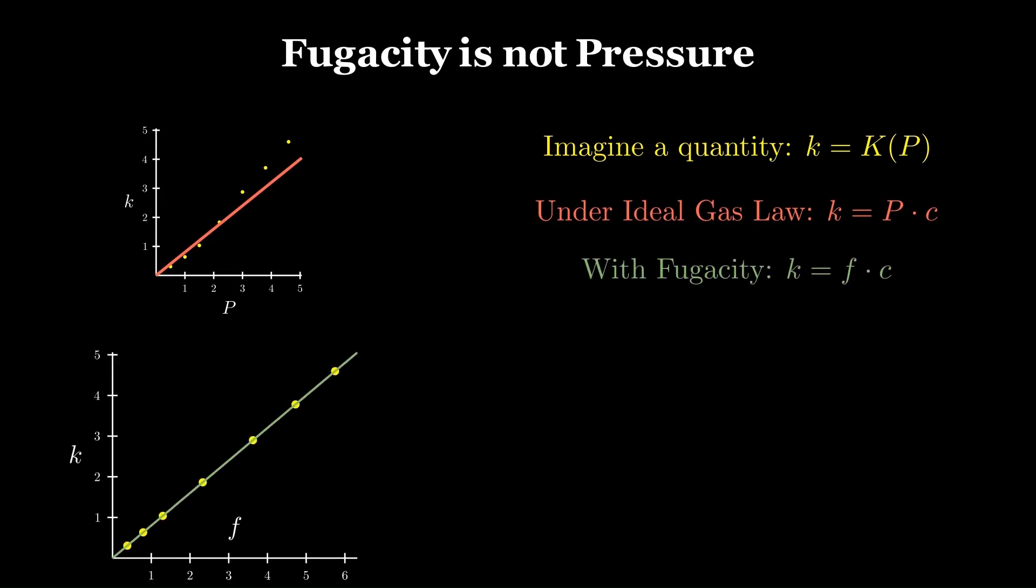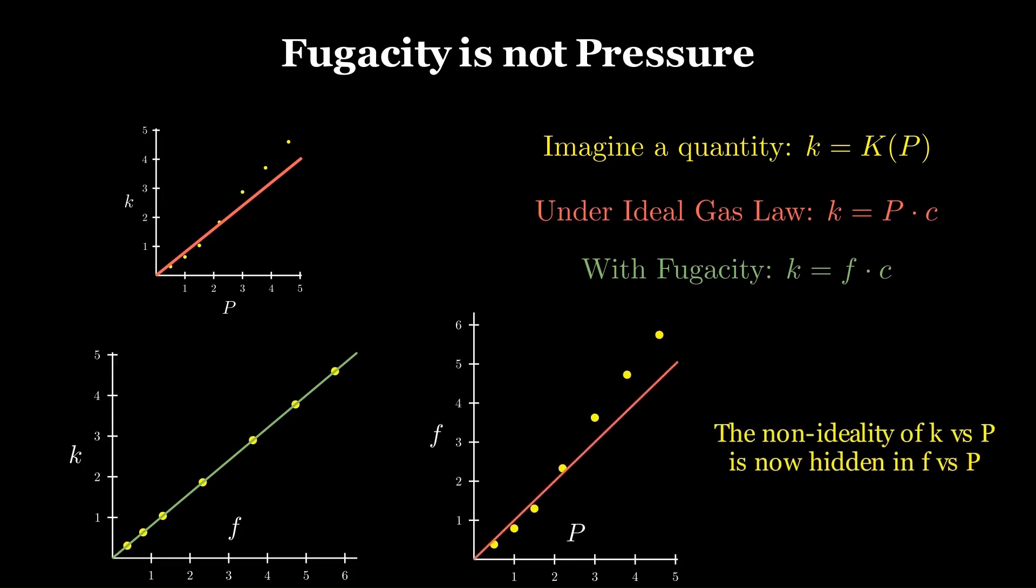When plotted this way, the real points fall on the line by construction. However, the non-ideality has not disappeared. It has been absorbed into how f varies with P. In an f-P plot, only an ideal gas lies on f equal to P. Thus, fugacity is a thermodynamic construct, not pressure itself. At fixed temperature and composition, it is a function of pressure, equaling pressure only in the ideal limit.